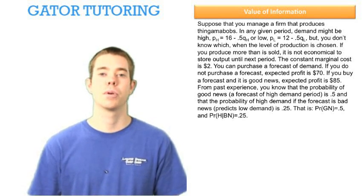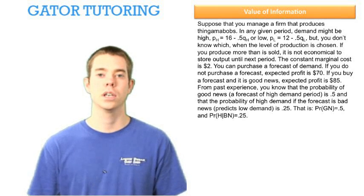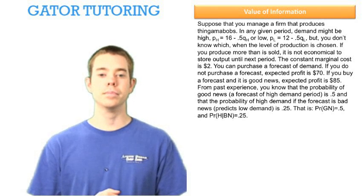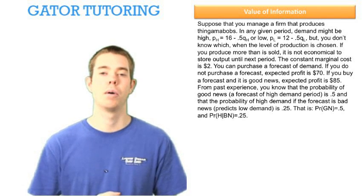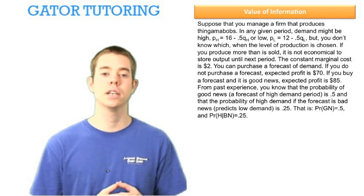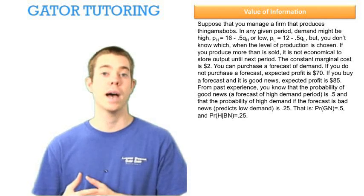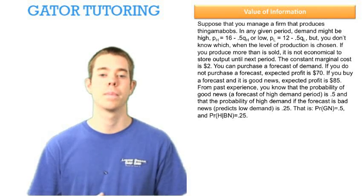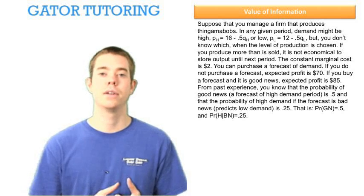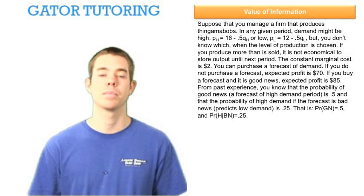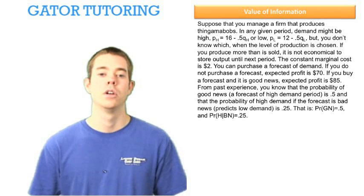It tells us if we purchase a forecast and get good news, we expect to make $85 — usually we have to solve for this number, but they've given it to us. From past experience, the probability of getting good news is 50%, which means the probability of getting bad news is also 50%. When given bad news, the chances of success are 25%, meaning chances of failure are 75%.